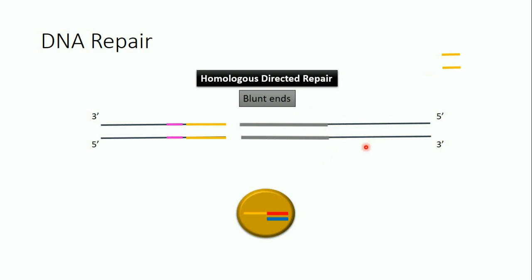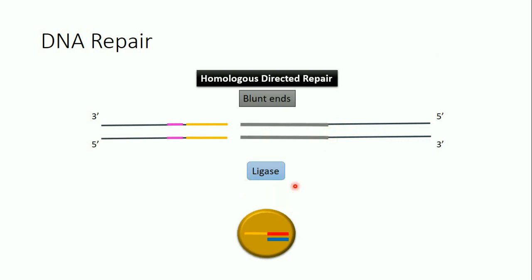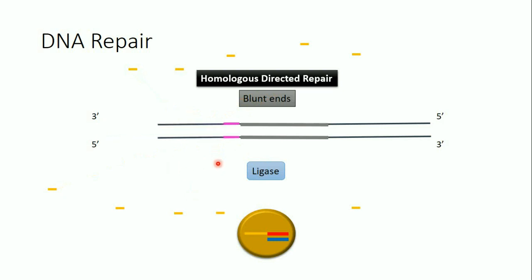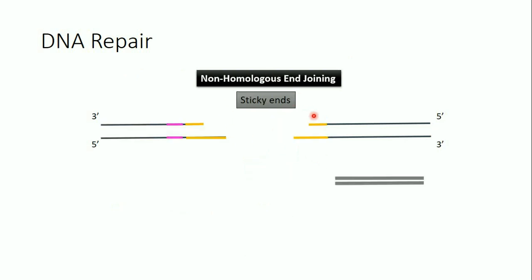Using DNA ligase, the DNA repair template binds to the broken sequence. The rest of Gene 1 is then degraded, and this strand is linked with the DNA repair template. Essentially, we removed Gene 1 and added the DNA repair template in its place — this is gene knocking out via homologous direct repair.